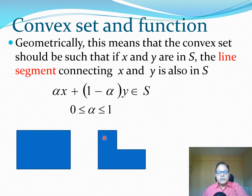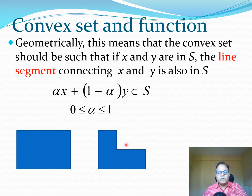In contrast, if we take a different set and draw a line between two points, some lines will lie within the set, but I can draw a line from one point to another where the line is not completely within the set — part of it falls outside of S. Therefore this is a non-convex set, as you can geometrically see.